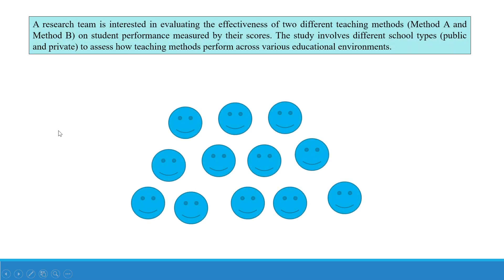Now let's try to understand this concept with the help of a case study. A research team is interested in evaluating the effectiveness of two different teaching methods — method A and method B — on student performance measured by their scores. The study involves different school types, including public and private schools, to assess how teaching methods perform across various educational environments. These are the students picked up from different schools.